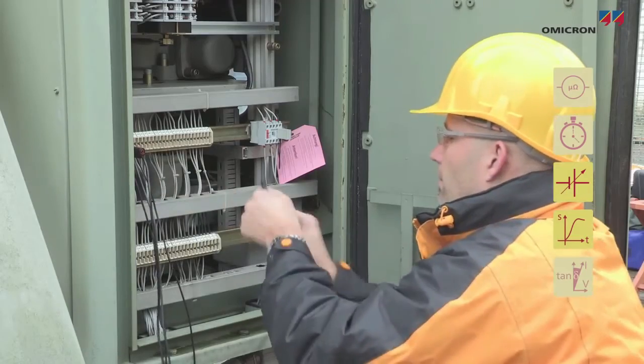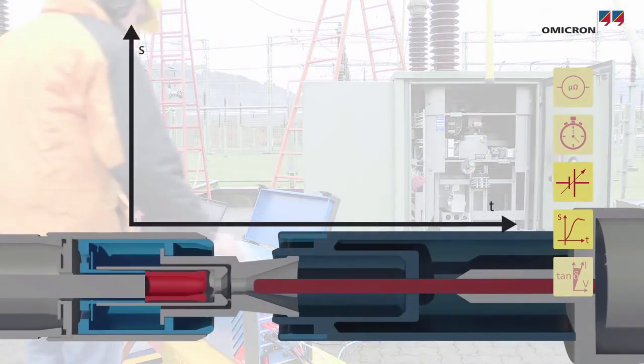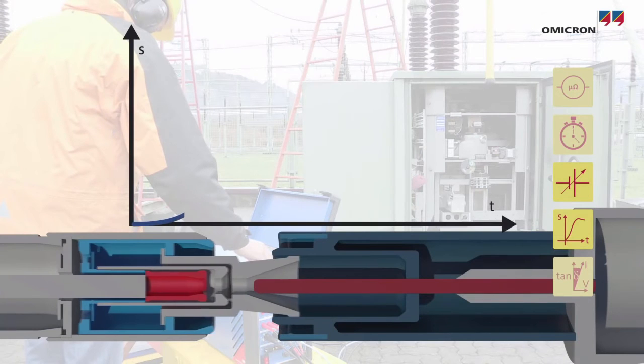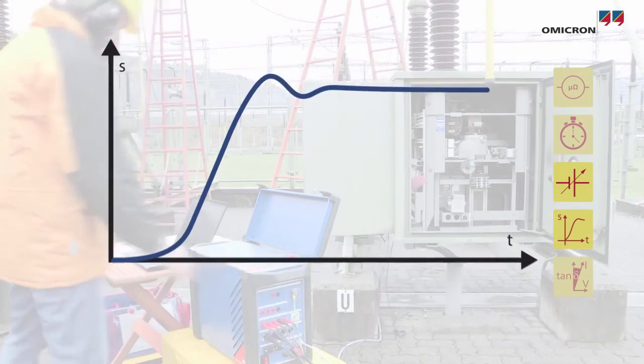Additionally, if the circuit breaker travel curve is recorded, it allows mechanical parameters to be assessed such as velocity, total travel, acceleration, over travel, and rebound.